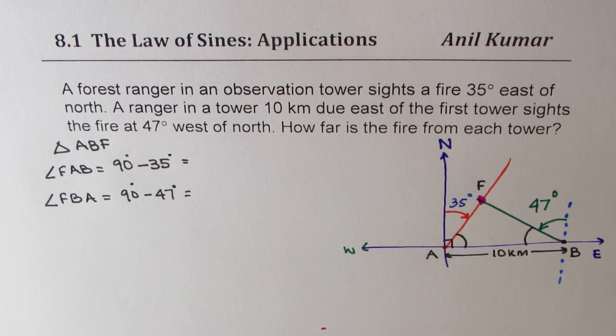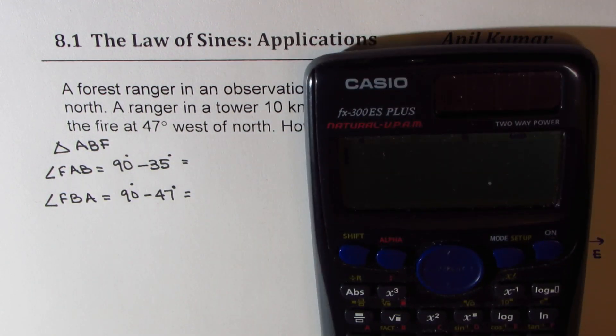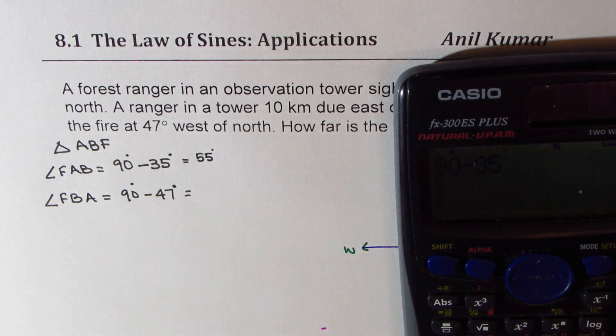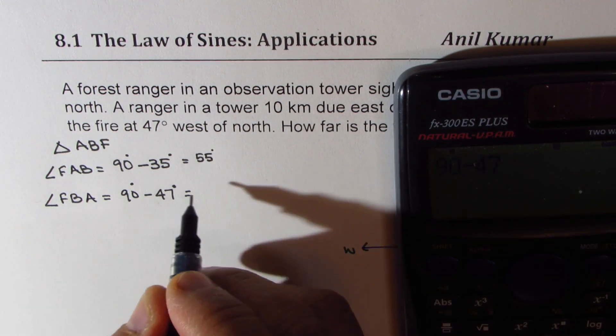You are allowed the calculator so use it. So we have 90 minus 35 equals 55 degrees and we have 90 minus 47 which is equal to 43 degrees.